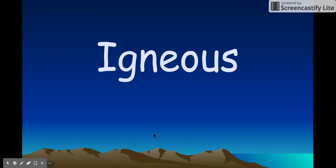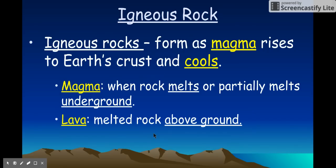Igneous rocks are formed from melted rock that cools. That melted rock could be magma — melted rock underground — or lava, which is melted rock above the surface of the Earth, like from a volcano. Whenever they harden and cool, we call them igneous rock. The word 'ign' comes from ignition or ignite, meaning fire.